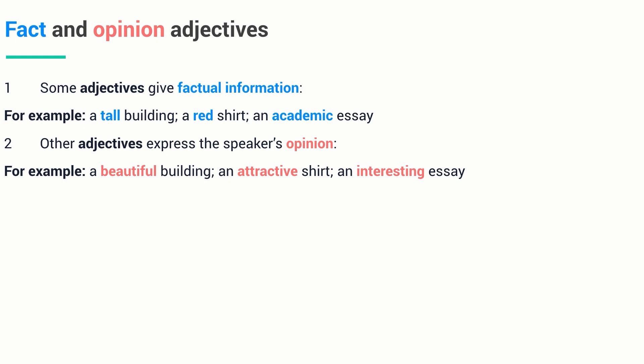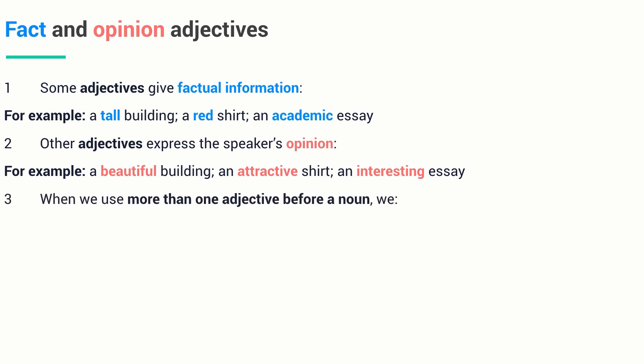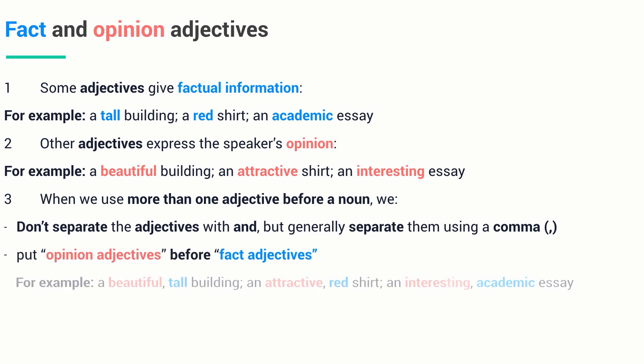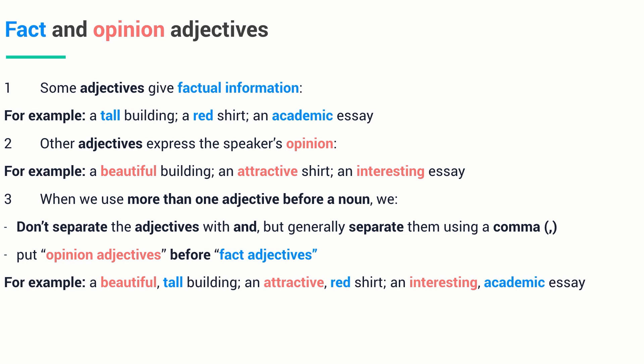Now, I hope you understand the difference between fact and opinion adjectives. Do you know how to use them together? When we use more than one adjective before a noun, we don't separate the adjectives with 'and', but generally separate them using a comma. In addition, we put opinion adjectives before fact adjectives. For example, a beautiful tall building, an attractive red shirt, an interesting academic essay.